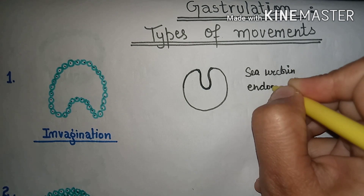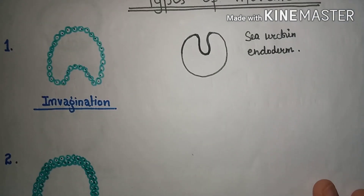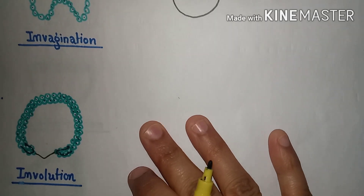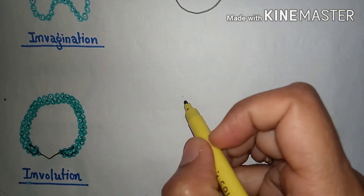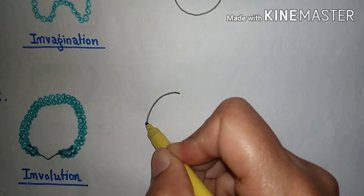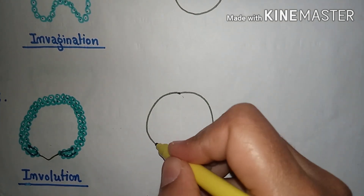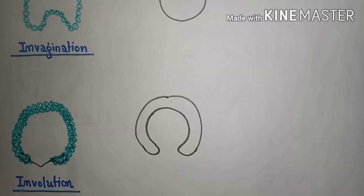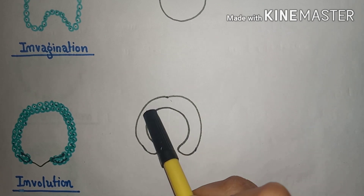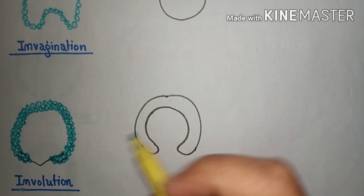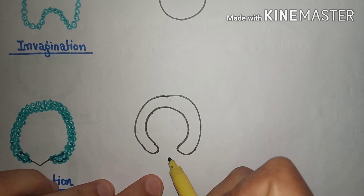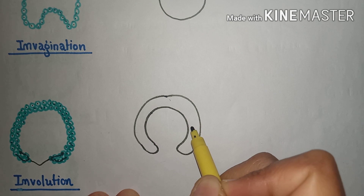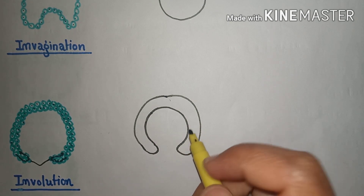The second cell movement is known as involution. In this case, suppose we have a ball and we press it so much that it flattens over another layer. When we push the ball from inside upward, one layer is flattened over the other layer. This kind of cell movement is known as involution.